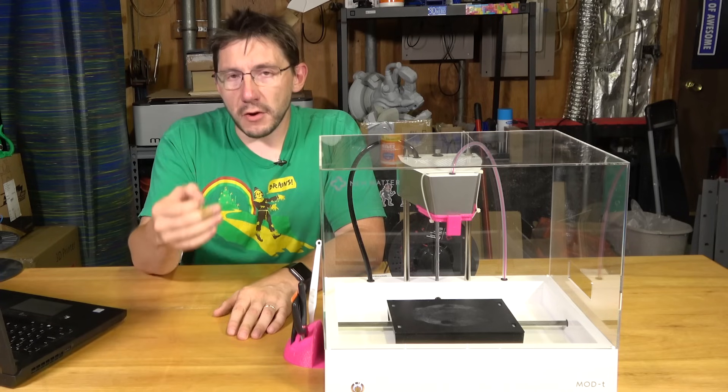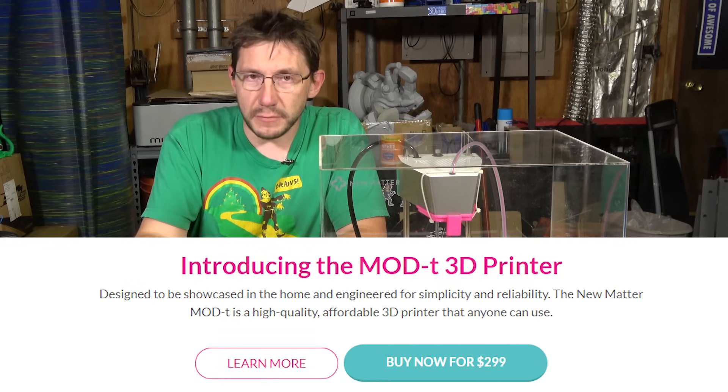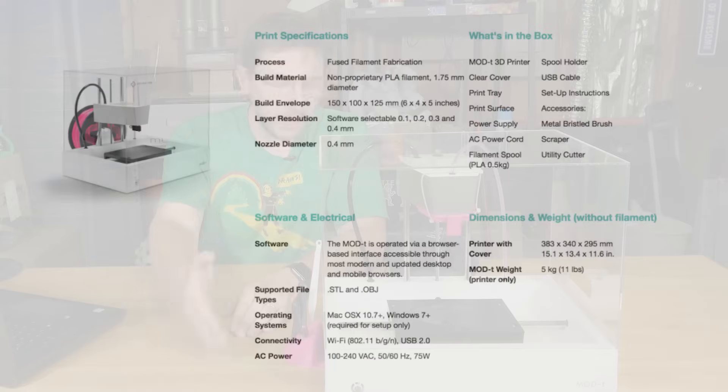The Numatter Mod-T is a very interesting offering. At $299, it's an inexpensive machine for what it offers potentially. It's got a 150 by 100 by 125 millimeter build envelope. It's got a 0.4 nozzle. It takes 1.75 millimeter filament and it'll print essentially PLA.